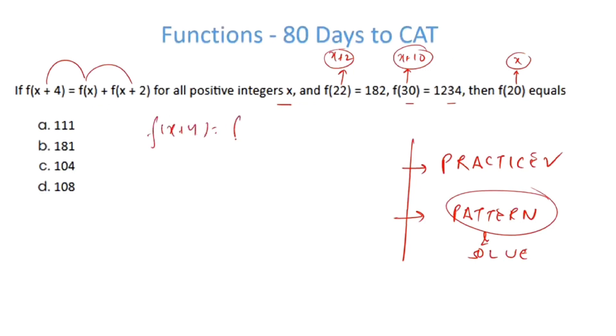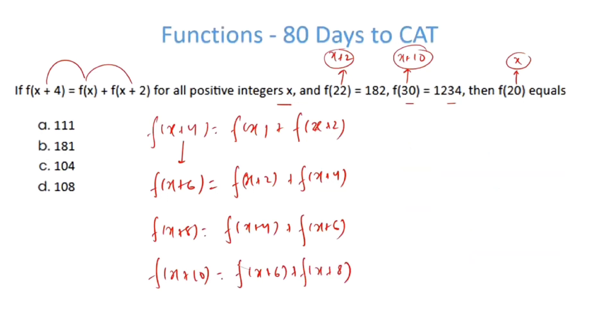fx plus 4 is equal to fx plus fx plus 2. Quite simply, I'll write fx plus 6 is equal to fx plus 2 plus fx plus 4, and similarly I can write fx plus 10 is equal to fx plus 6 plus fx plus 8. The pattern is very clear. I have to get fx plus 10 and I have to get fx and fx plus 2. Everything else has to go.